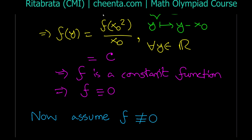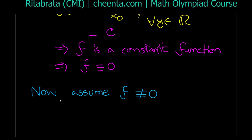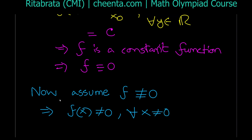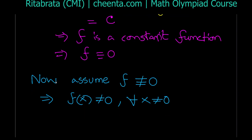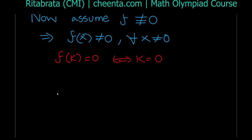We want to find solutions other than f ≡ 0, and we'll show f must be identically equal to x. In that case, f cannot take any zero value at non-zero points, which means f(k) = 0 if and only if k = 0.